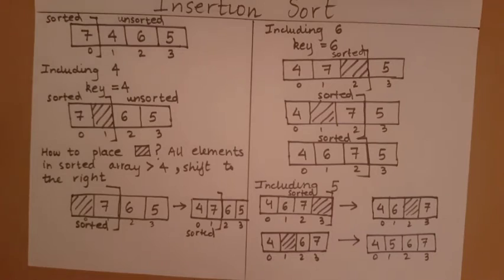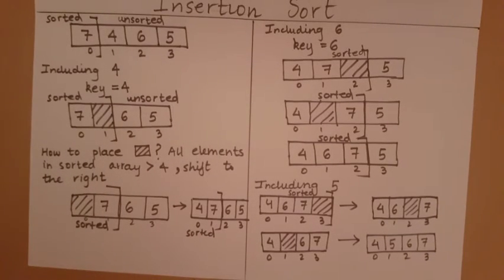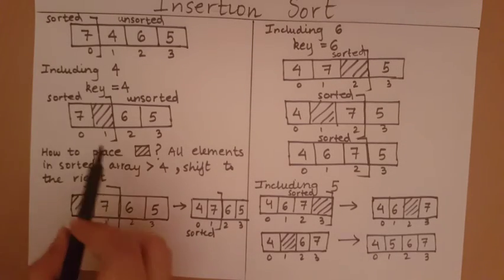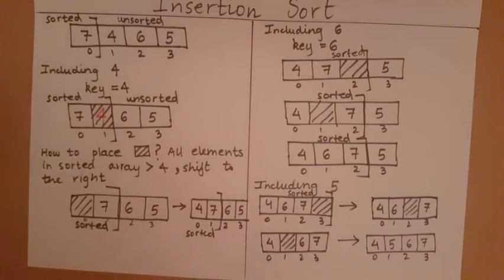It's important to note what we mean when we say a 'space is created.' This does not mean the array stores a null value. When we say a space has been created where four previously was, it means we've stored that element in a variable called key. We don't delete it from the array, but we no longer need the array to track it — so we can treat that block as a space, ready to be overwritten.